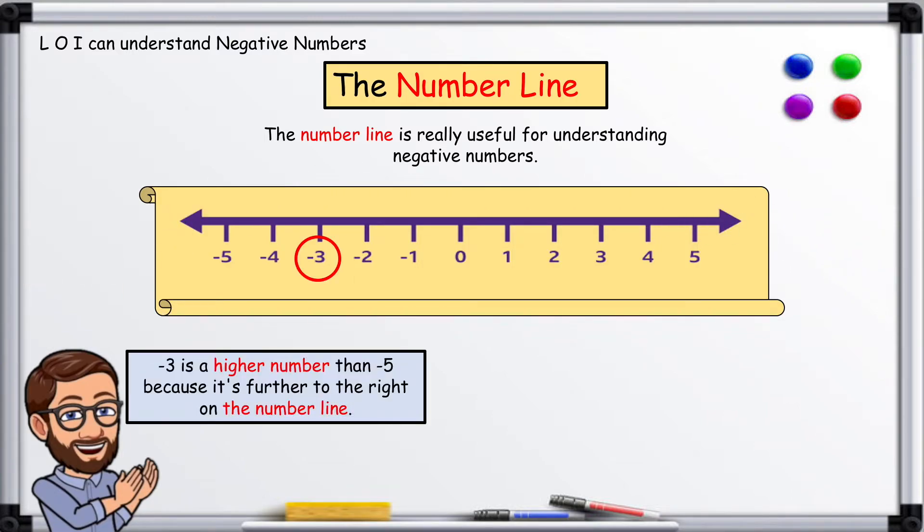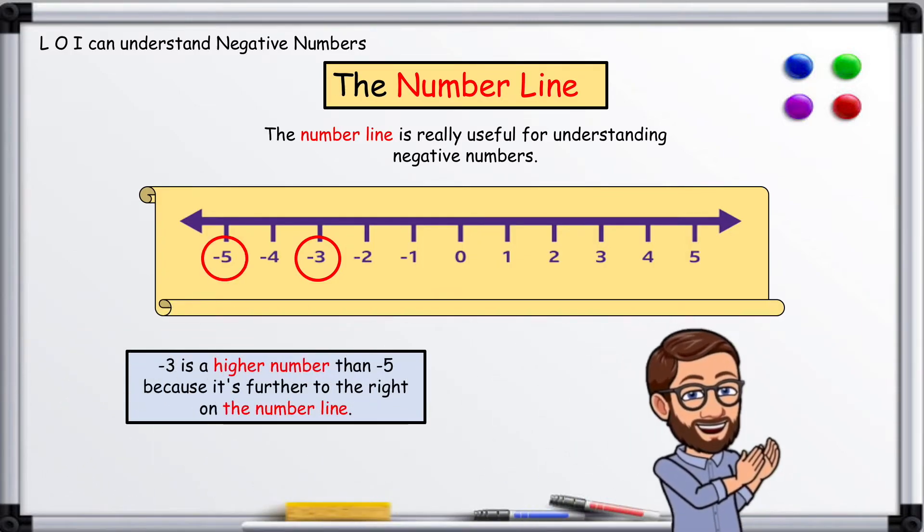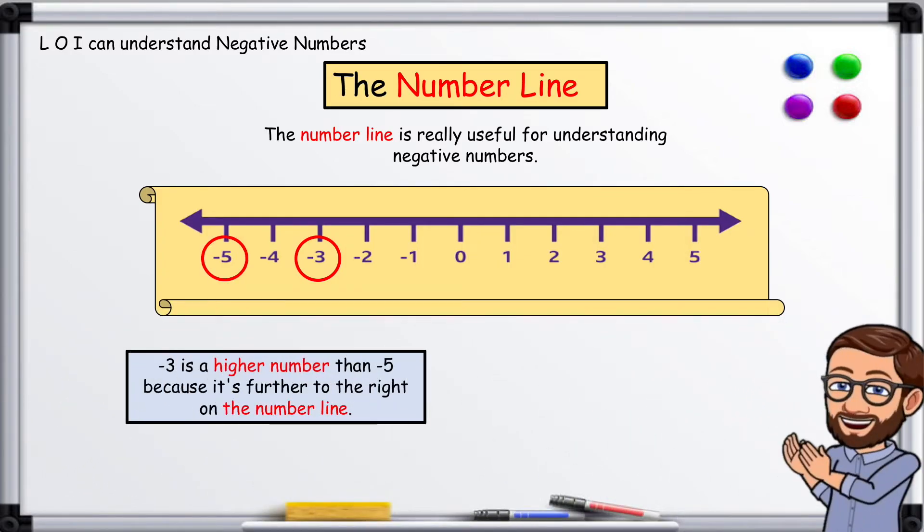Negative three is a higher number than negative five because it's further to the right on the number line.